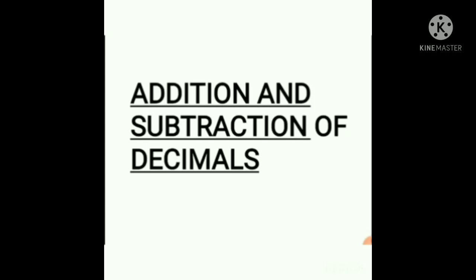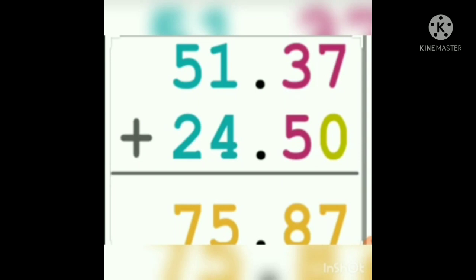You know how to add and subtract normal numbers — the same rule we are applying here. The only thing you have to keep in mind is that the decimal point and the place value of the numbers should align correctly. For example, here we are adding two decimal numbers: 51.37 and 24.50. When arranging and writing, the decimal points should come accurately and the place values should coincide correctly.